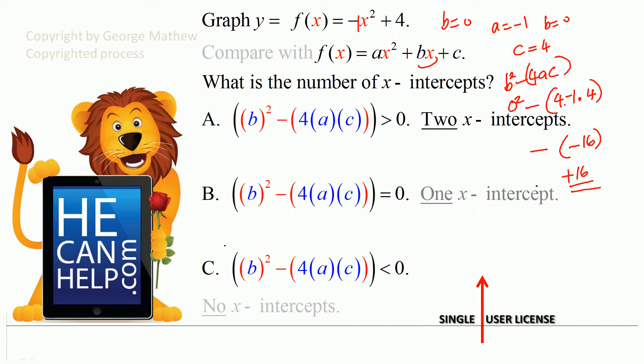So b squared minus 4ac is positive 16, it is greater than 0, so we expect 2 x-intercepts when we graph it.